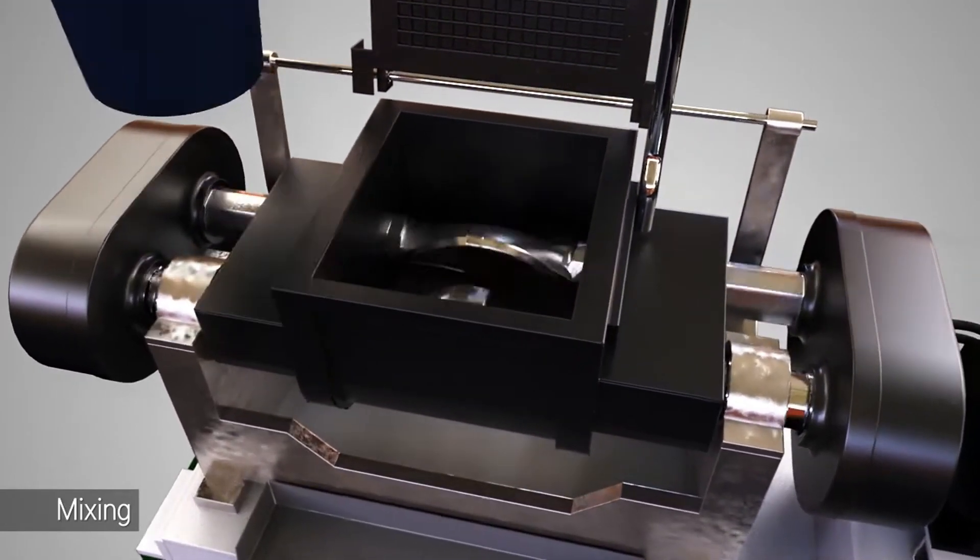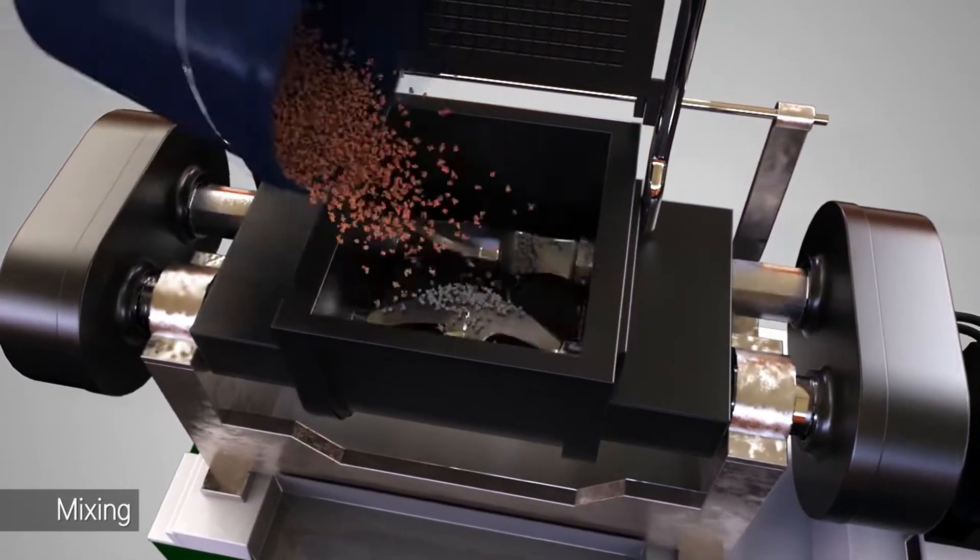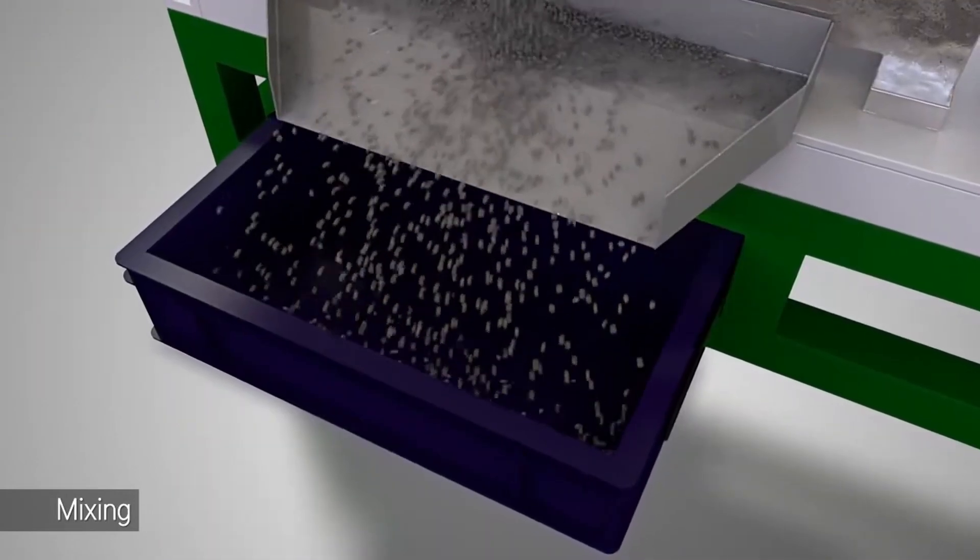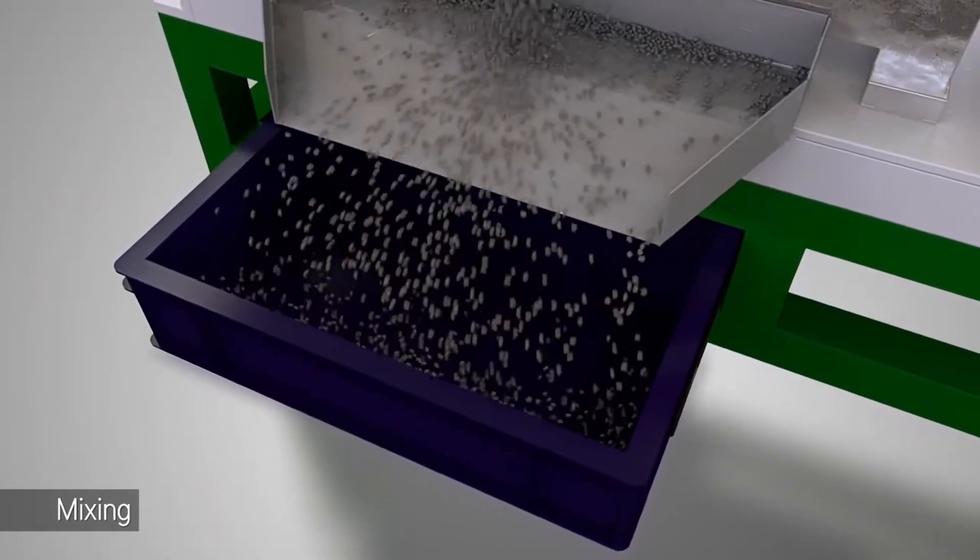The first step, mixing, is to fully mix the non-fluid metal powder and the fluidity and viscosity binder to make the feed for injection molding so that it has a certain fluidity and is suitable for injection molding.